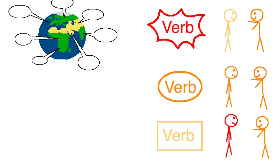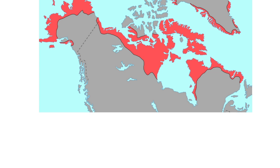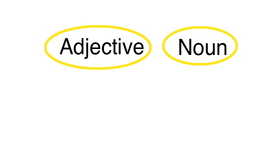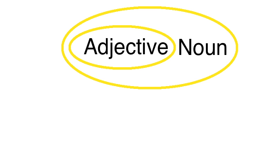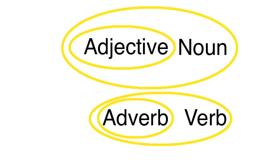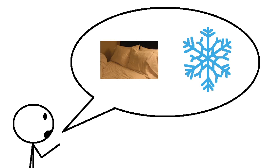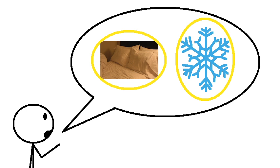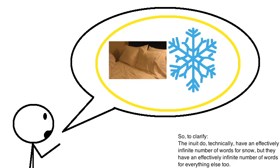Most languages have rules that change the verbs around depending on the subject and/or object of a sentence, but polysynthetic languages, like the Eskimo-Aleut languages, take things a step further. They have rules for combining adjectives into the nouns they describe, and for combining adverbs into the verbs they describe, making them all one word. So if you want to talk about soft snow, you wouldn't take the word for snow and the word for soft and just put them next to each other — instead you would combine them into a single word: 'soft snow.'